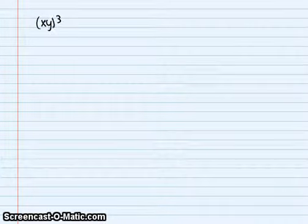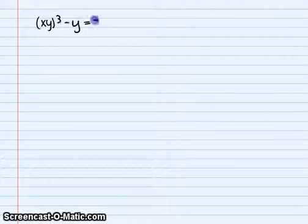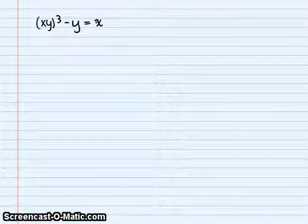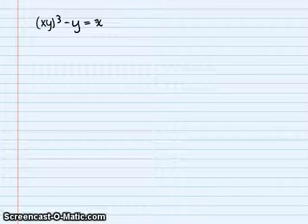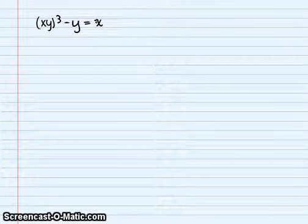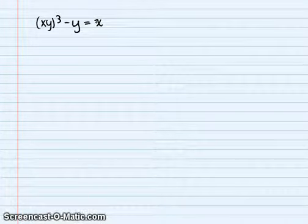Hello AP Calculus students. Here is the first of a couple videos of me solving implicit differentiation problems that will hopefully help you out with the homework. Here's the problem we're going to solve: xy³ minus y equals x. We want to take the derivative of this implicitly, not by solving for x first and then taking the derivative.